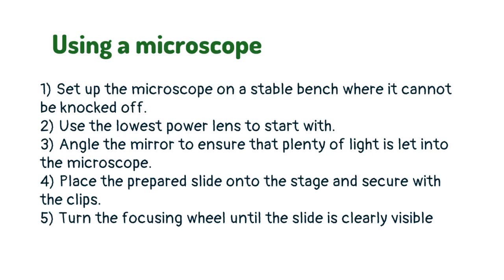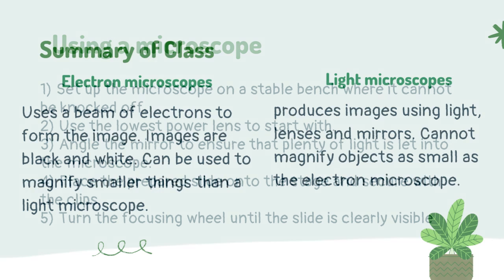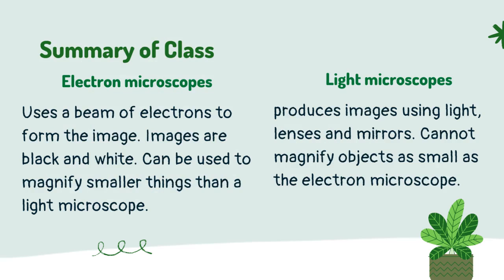Here are some rules for using a microscope: set up the microscope on a stable bench where it cannot be knocked off. Use the lowest power lens to start with. Angle the mirror to ensure that plenty of light is let into the microscope. Place the prepared slide onto the stage and secure with the clips. Turn the focusing wheel until the slide is clearly visible.